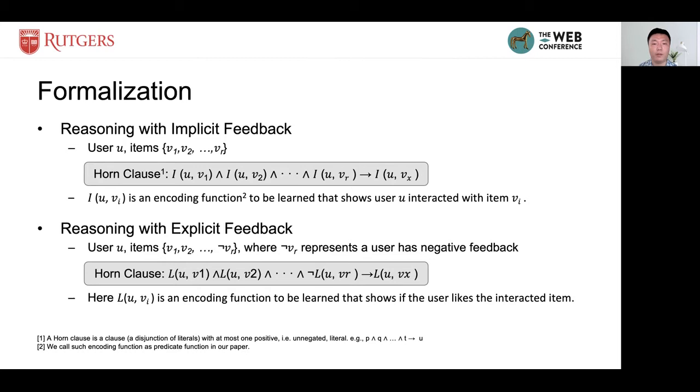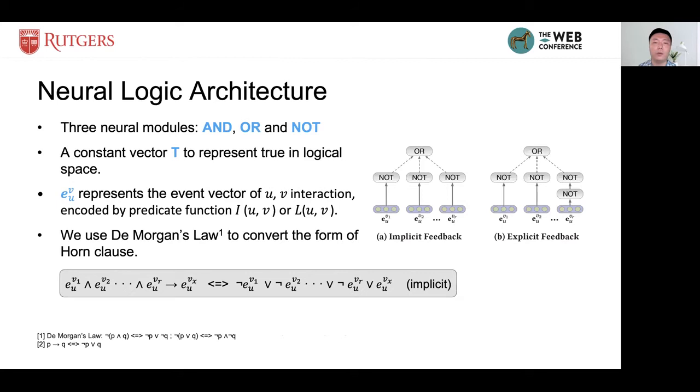Now, we know how to get a logical expression by giving a user and a historical interaction. Next step is to know how to build up a neural network based on a given logical expression.